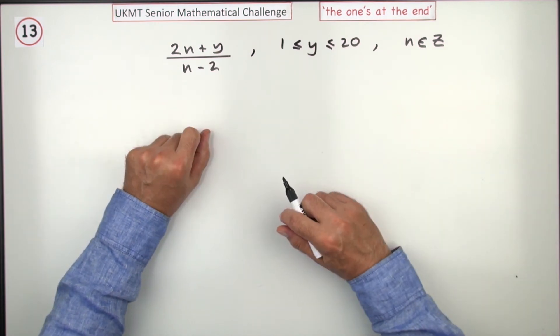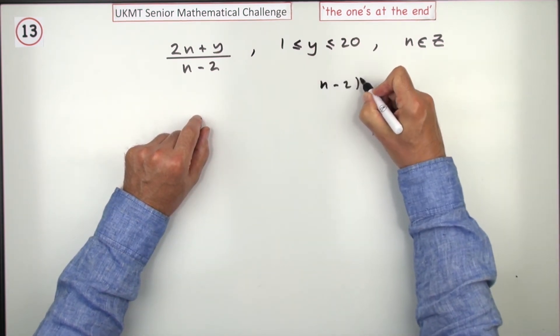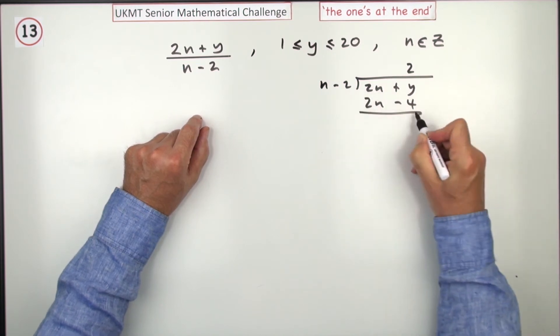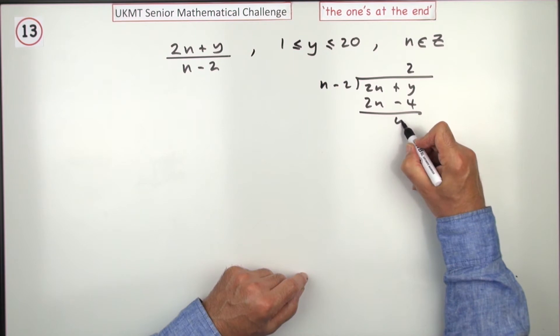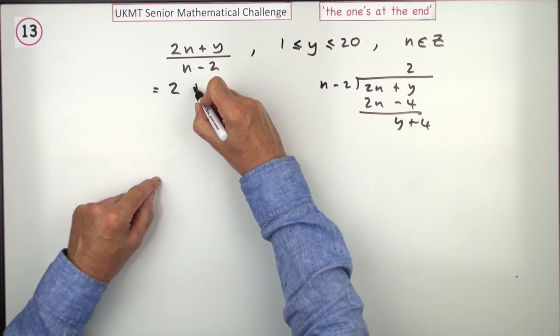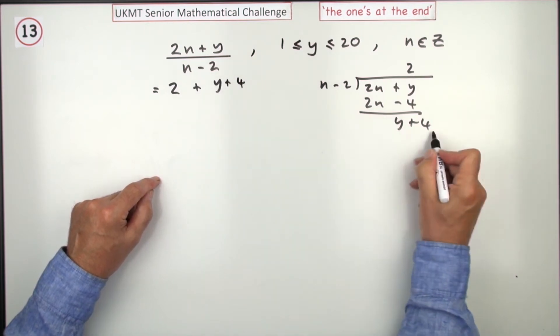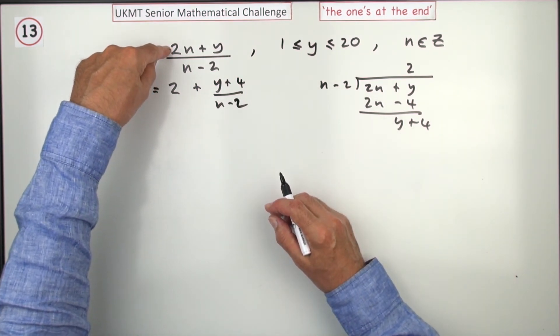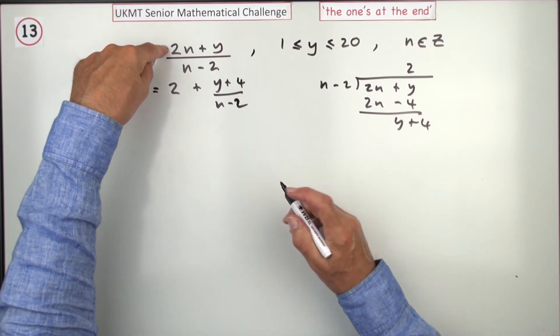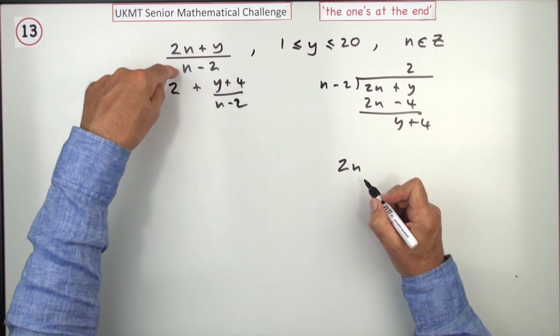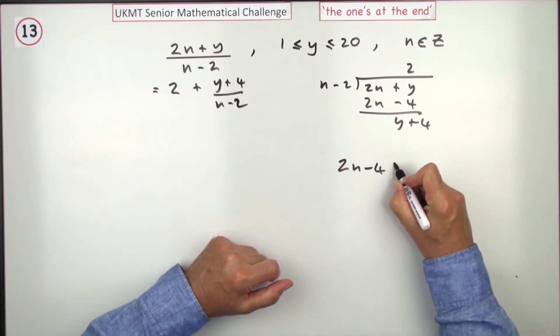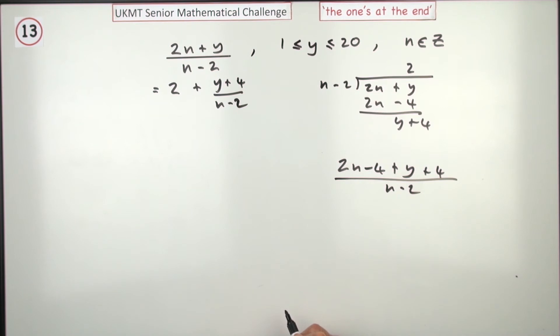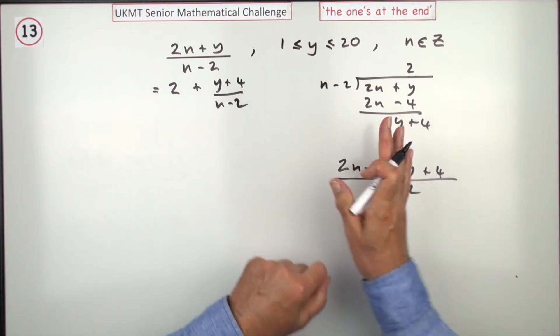So you could carry out a formal division. n minus 2 into 2n plus y will obviously go twice. So that's 2n minus 4, and upon subtracting that, that's take away negative 4, so that'll be y plus 4. So the answer will be 2 plus y plus 4 being the remainder, still being divided by n minus 2. Or you could reconstruct the top to involve multiples of this, so if I've got n minus 2 and I double it, I want a 2n minus 4, but to balance that off, to keep the top the same, I'll have to put a plus y plus 4 over n minus 2. Then of course that splits into the same result. That part becomes 2, and that part becomes this.